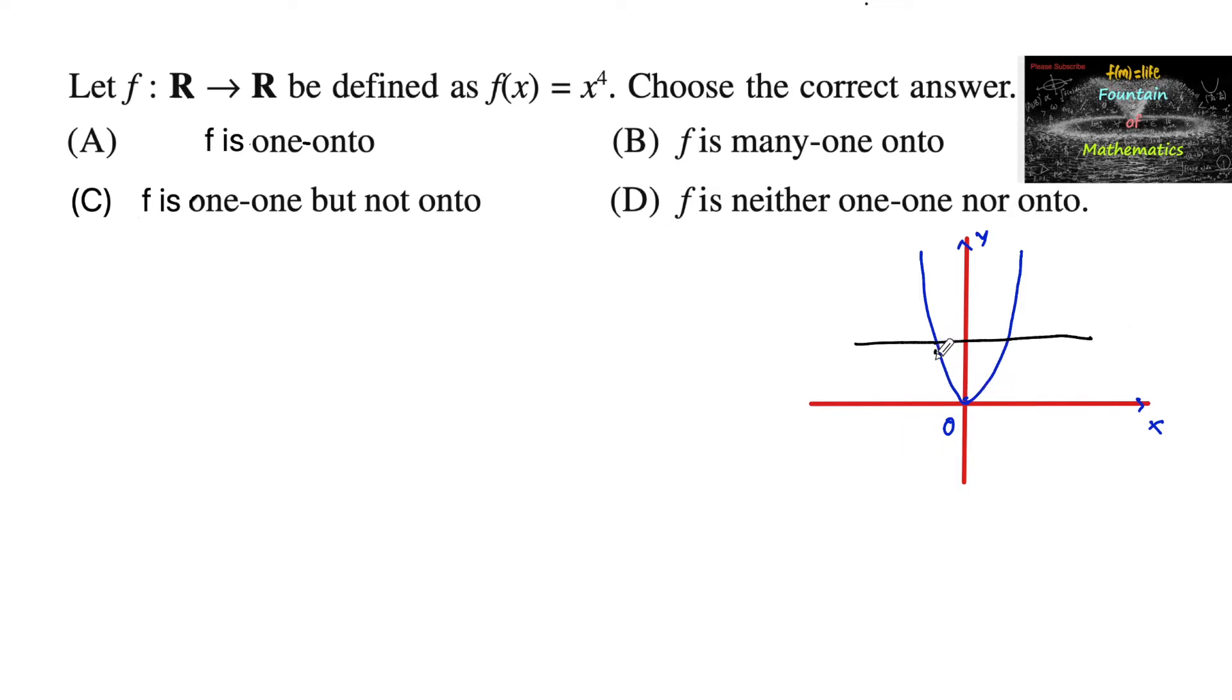You can observe that for two different values of x, say x1 and x2, we can find that there is only one particular y. For x1 not equals to x2, f(x1) and f(x2) both are equal to the image y. Hence we can say that this function is not one-to-one.